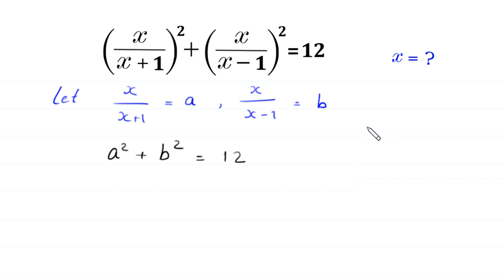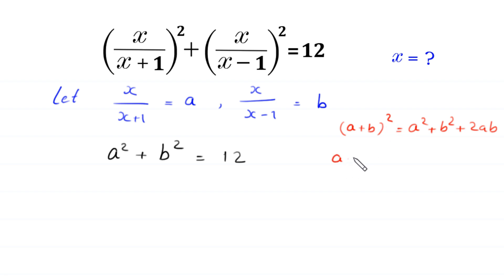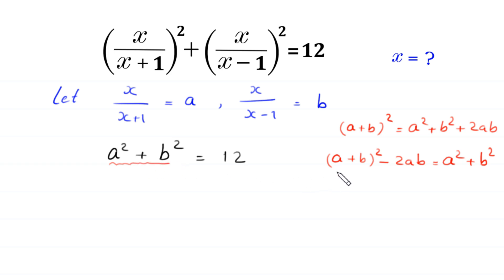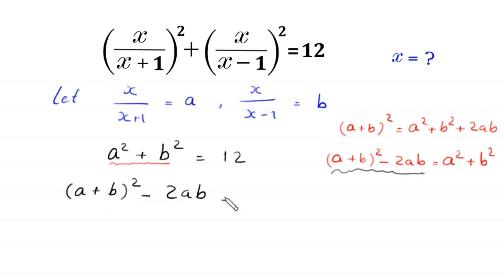Now, by using the algebraic identity (a plus b) whole squared is equal to a squared plus b squared plus 2ab. If we move the plus 2ab to the left side, then this becomes (a plus b) whole squared minus 2ab is equal to a squared plus b squared. So in our equation, we replace a squared plus b squared with (a plus b) whole squared minus 2ab, which is equal to 12.